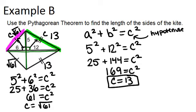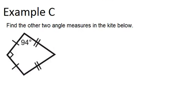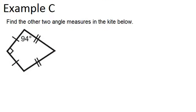Alright, let's finish off with example C. Find the other two angle measures in the kite below. So we're given a 94 degree angle, and also a right angle, which would be 90 degrees. Now remember that the non-vertex angles, so this angle and this angle, are always congruent.